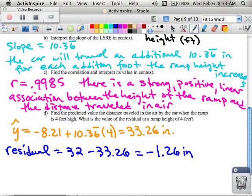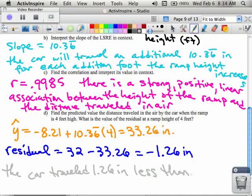What does this mean? This means the car traveled one point two six inches less than predicted.